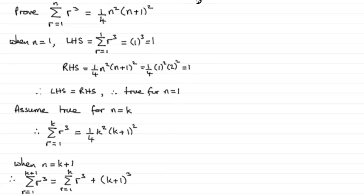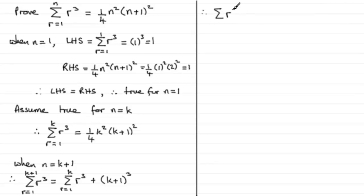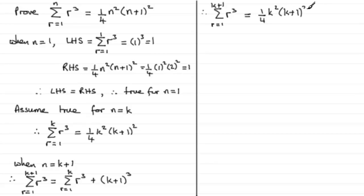We just need to simplify this now. The summation of r cubed from r equals 1 to k plus 1 equals — since we've assumed the inductive hypothesis is true — a quarter k squared times k plus 1, all squared, and then we add on that last term, which is k plus 1, all cubed.